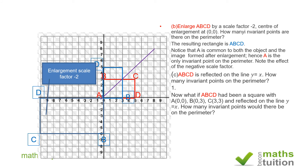Now the question asks: what if ABCD had been a square, with A at (0, 0), B at (0, 3), C at (3, 3), reflected on the line y = x? How many invariant points will there be on the perimeter?